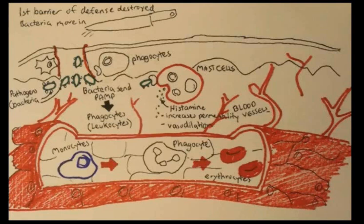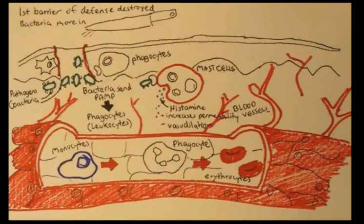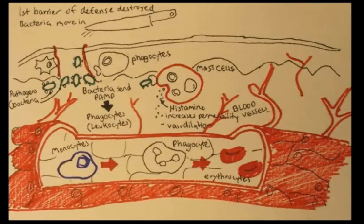Inside the blood vessels there are various proteins, especially inflammatory mediators, which are essential for the inflammatory process. There are three important ones to look into further: the first is arachidonic acid, the second is kinins, and the last is plasmins.